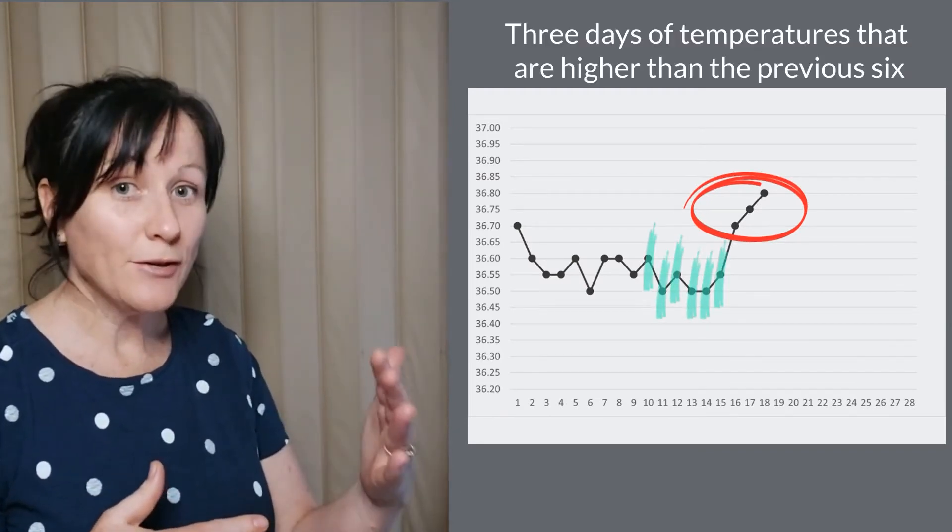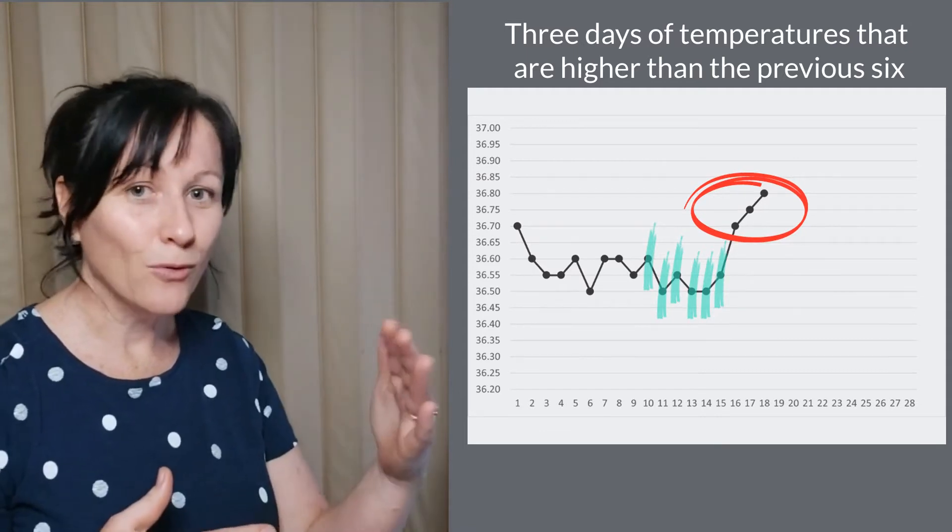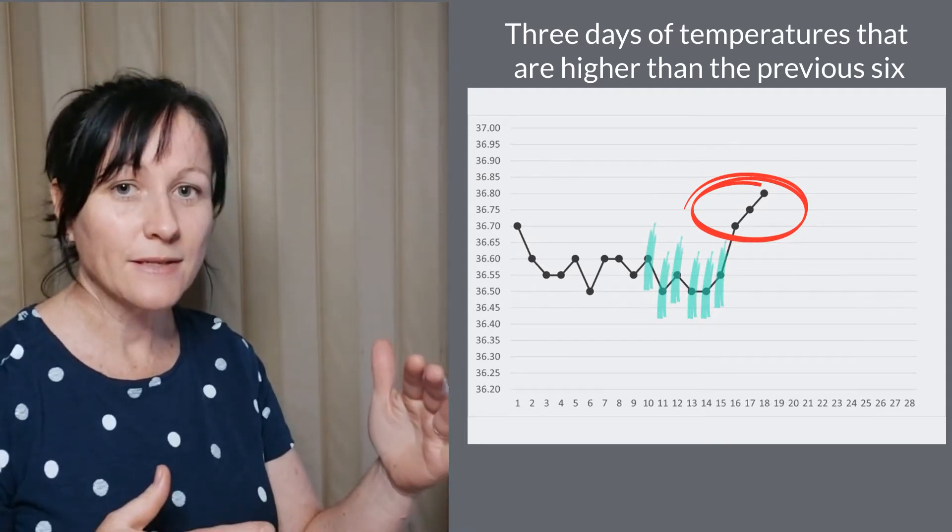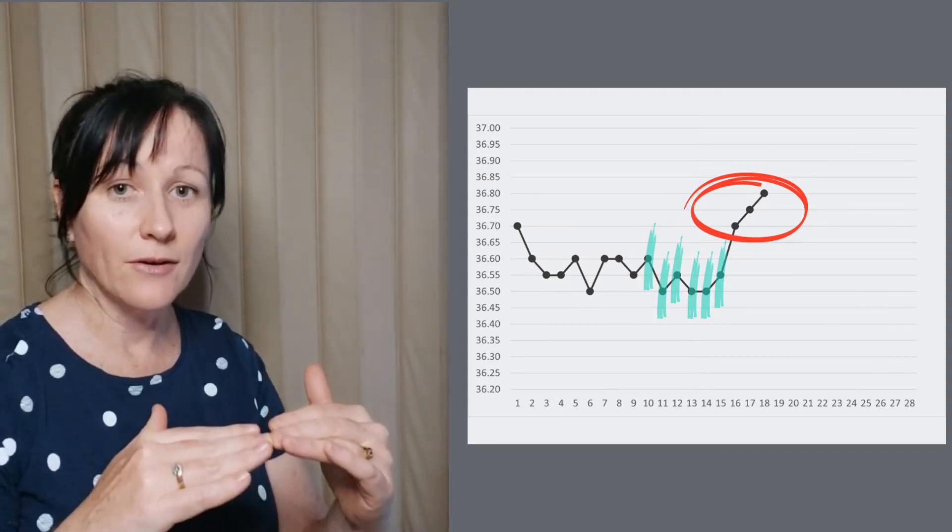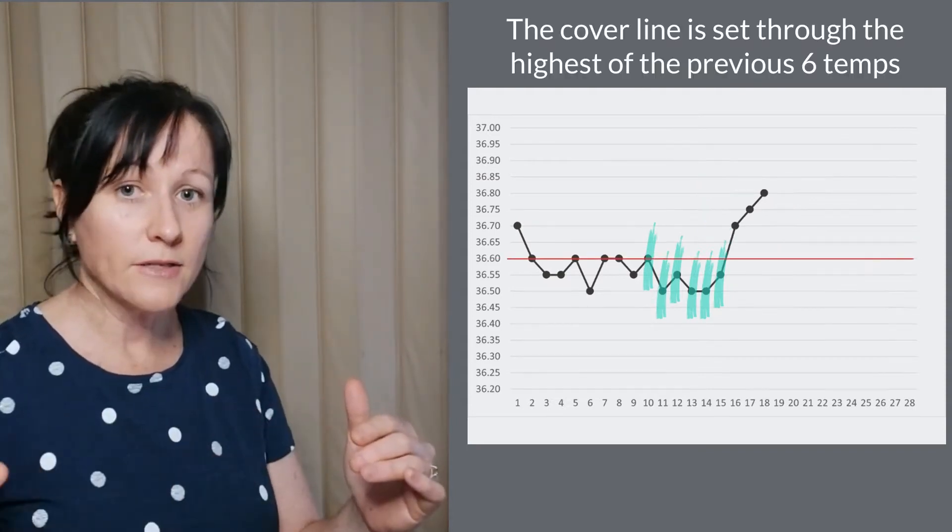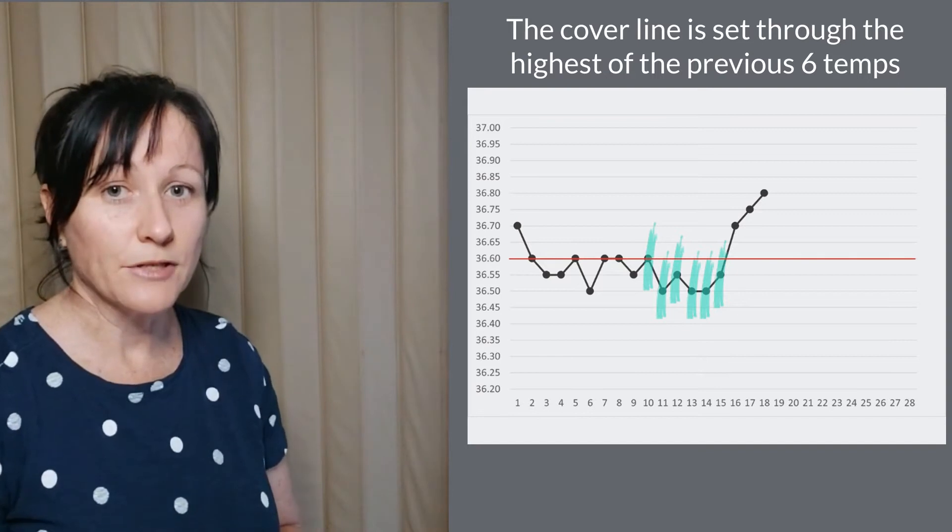Once you see you've got three days on your chart that all look to be higher than the previous six, you can now set your line, your cover line, through the highest of those previous six temperatures.